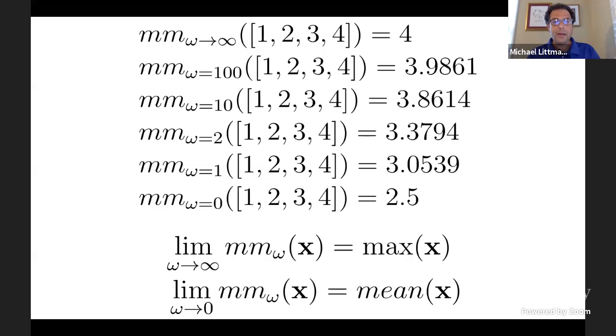If we've got a set of values, one, two, three, four, and we apply this. Kavosh calls it mellow max. It's like a mellow. It's like max, but it's more mellow. I don't know. He, I told him that was a terrible name, but he really became very attached to it. So mellow max, you know, mellow, has this parameter omega. If we summarize the values one, two, three, four, as that value omega goes to infinity, what you get out in the case of one, two, three, four is four.